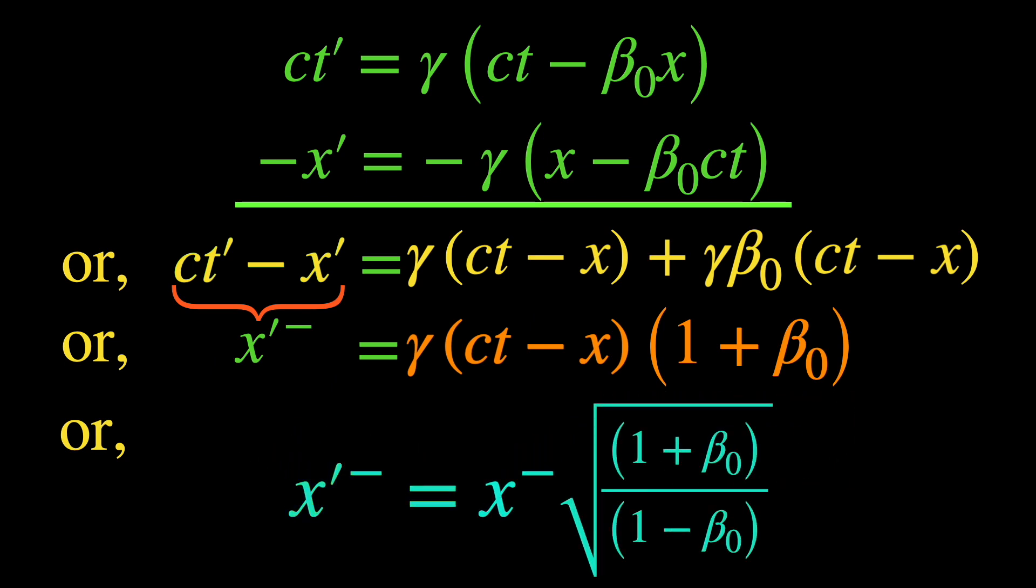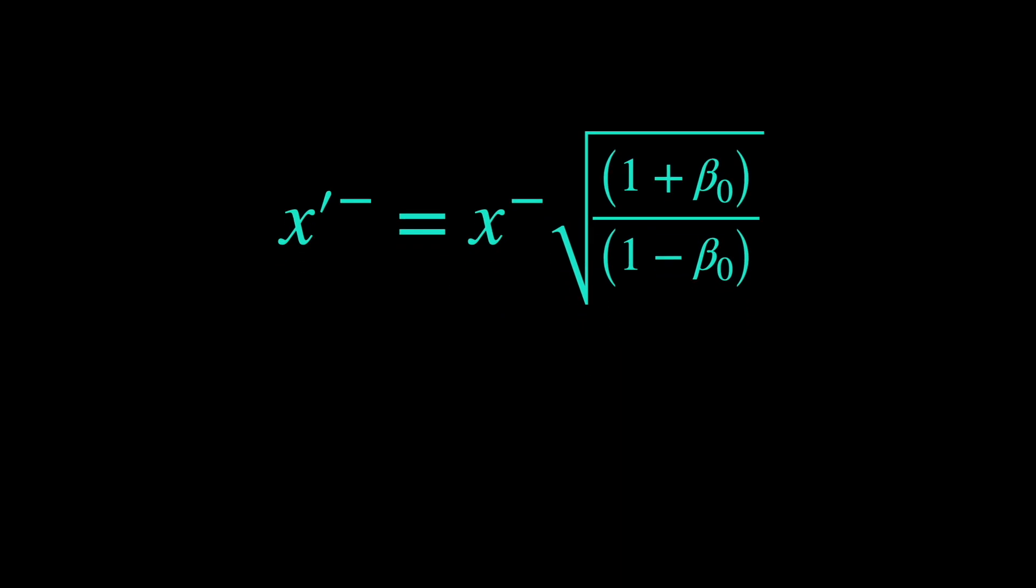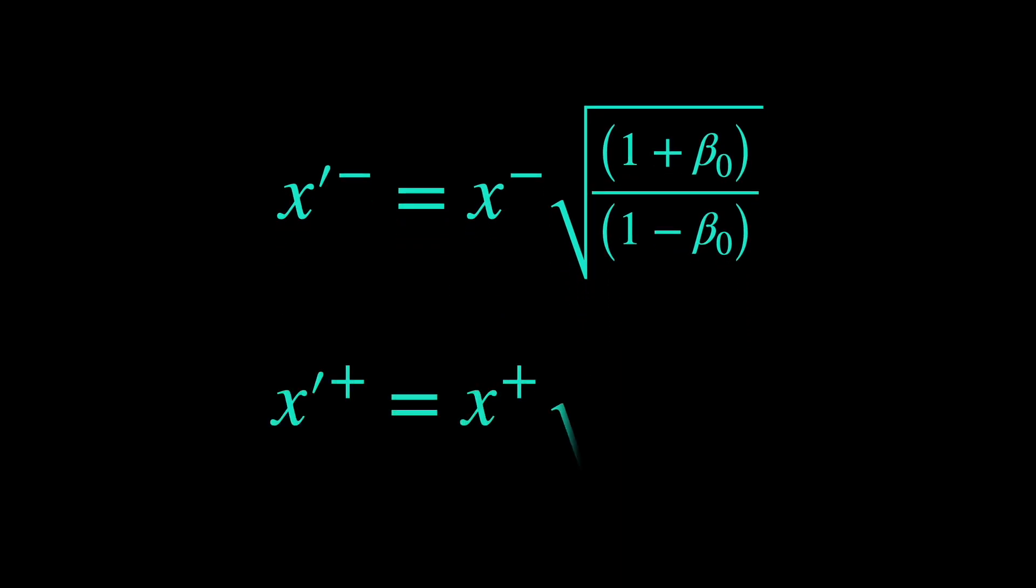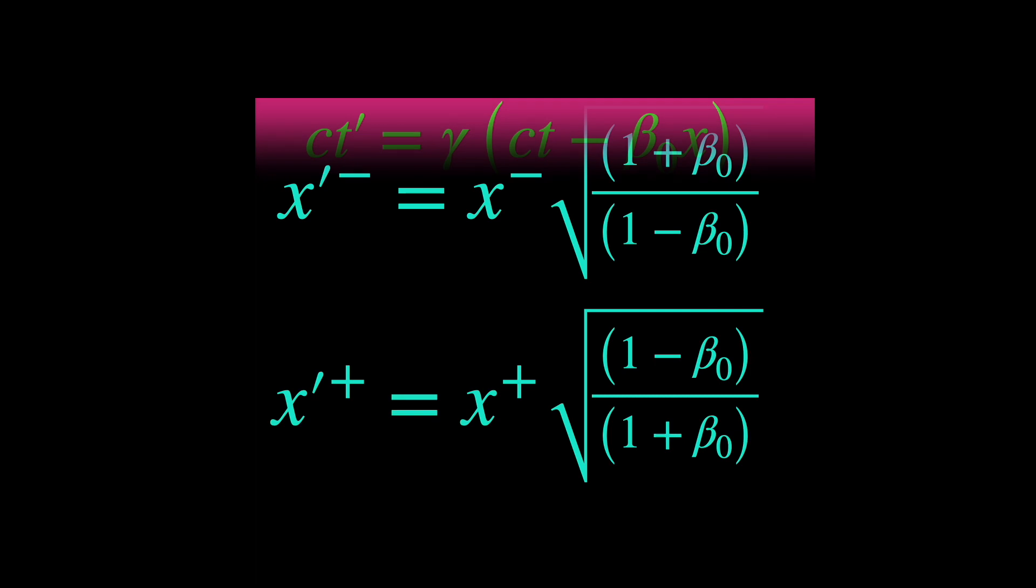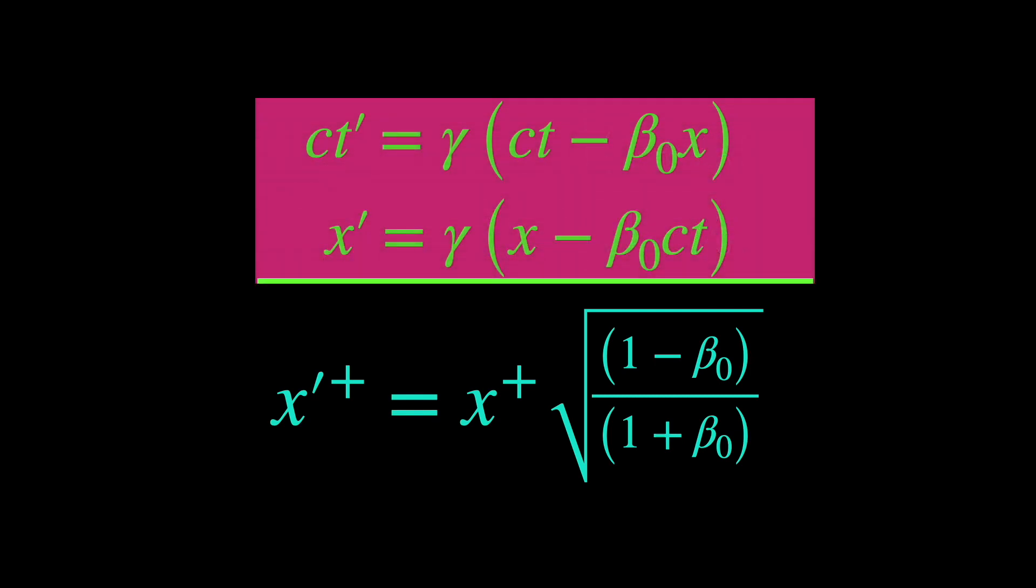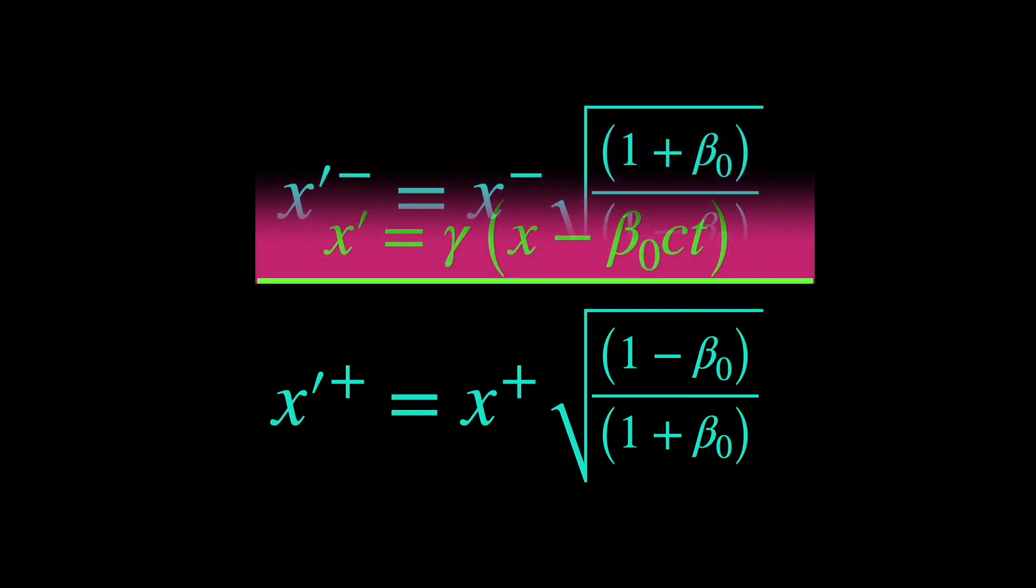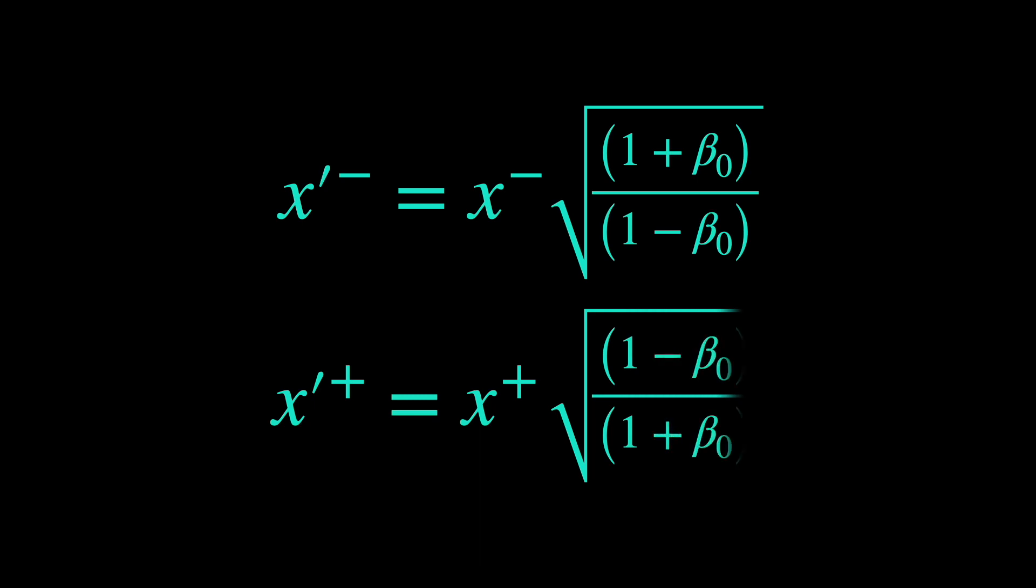So a constant factor made of beta 0, the relative velocity between the two frames, which is a constant. A similar equation giving x plus prime in terms of x plus comes by adding the equations for ct and x. Here, the constant factor happened to be just the inverse of the earlier one. Okay, so we now have the Lorentz transformation equations in terms of the light cone coordinates. What's the big deal?